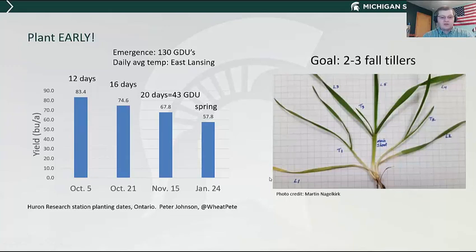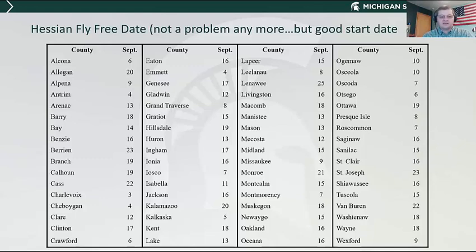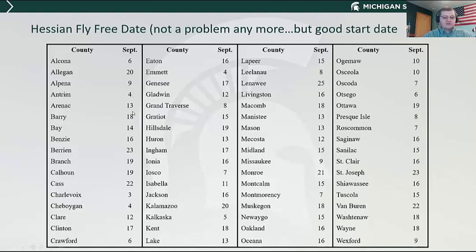Hessian fly is usually not a problem in the state anymore. I don't know that I've ever seen a field with Hessian fly problems — you can find a few on occasion, but they're not causing the kind of damage they used to because we have some built-in resistance. So while Hessian fly really isn't a problem, these Hessian fly-free dates are still a pretty good date to consider starting planting wheat in your area. For example, if you're in Barry County, September 18th is probably a pretty good date to start planting wheat from an agronomic perspective.